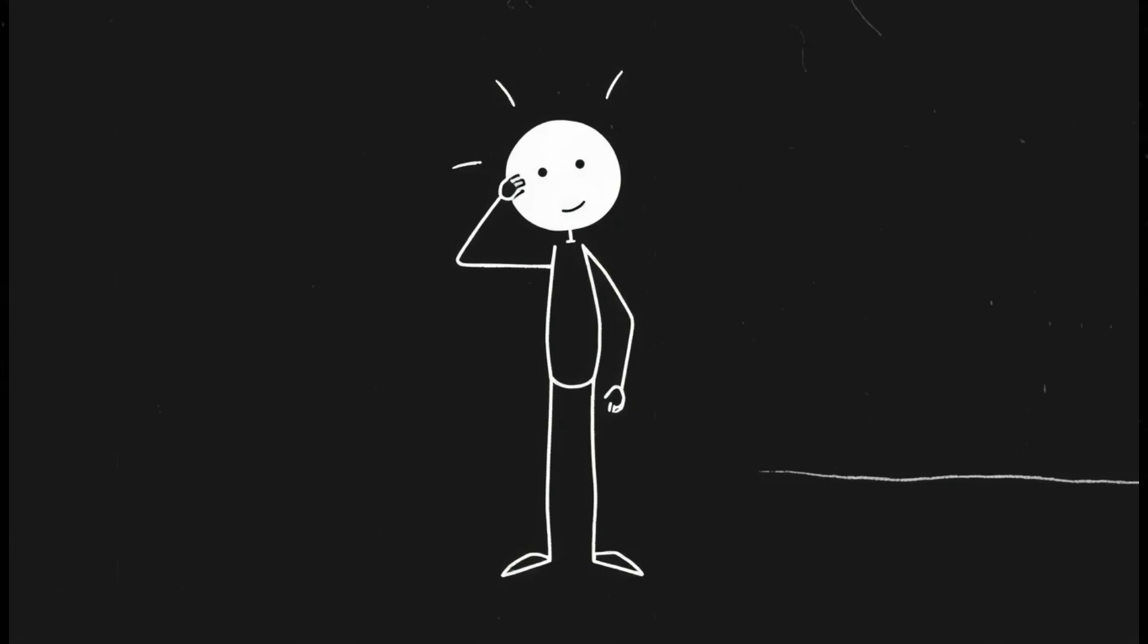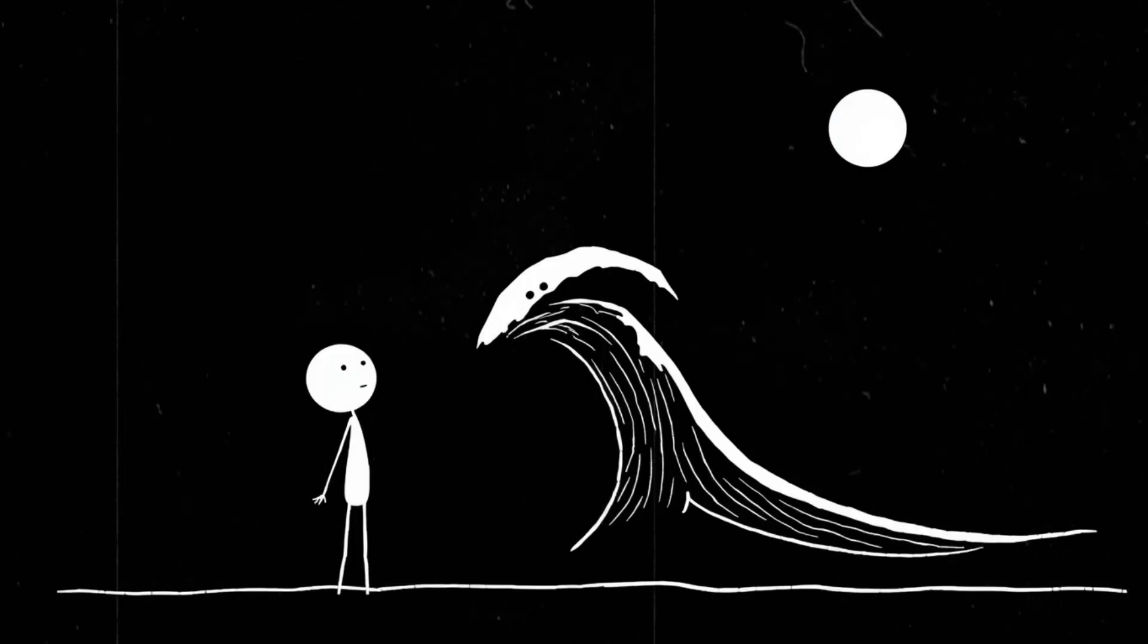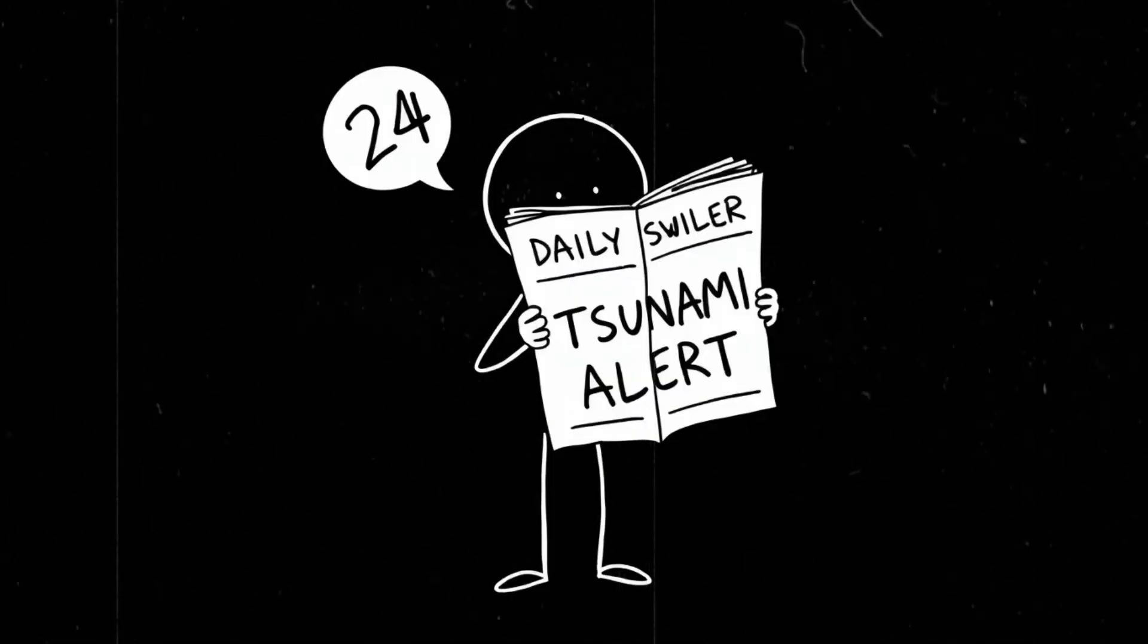Other times, the moons might cancel each other out, leaving the beaches eerily still. And if these moons ever align in just the wrong way, you could be looking at waves hundreds of feet high. Imagine a world where tsunamis aren't once-in-a-century disasters. They're just part of the weather forecast.